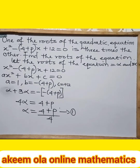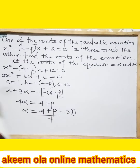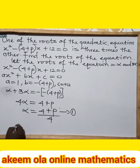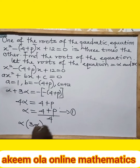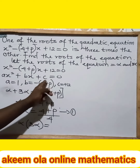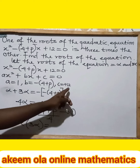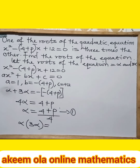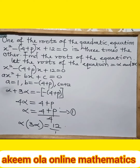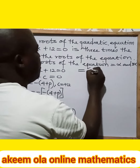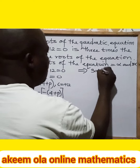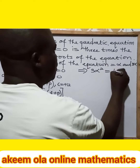We can now consider the product of roots. If we consider the product of roots, that means we are going to have alpha multiplied by 3*alpha, which will be equal to c all over a. So we have c all over a, which is 12 over 1. That means alpha times 3*alpha gives us 3*alpha squared, which is equal to 12.